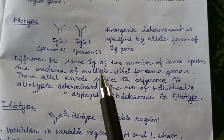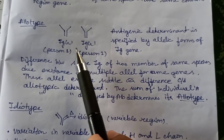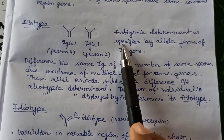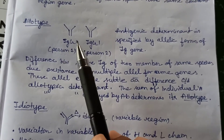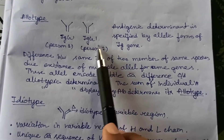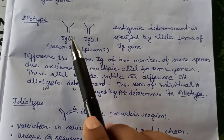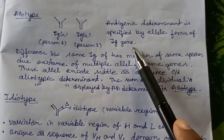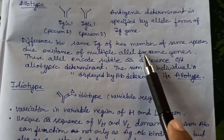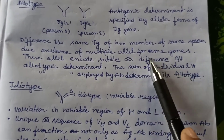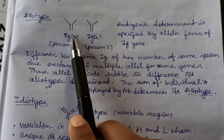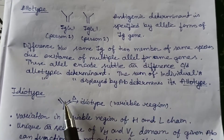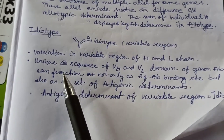The allotype is when the same immunoglobulin differs between two members of the same species. For example, my IgG1 and your IgG1 differ because of multiple alleles encoding the immunoglobulin genes. These antigenic determinants are specified by allelic forms of immunoglobulin genes — multiple alleles encode different amino acids, causing differences between IgG1 of different individuals of the same species.